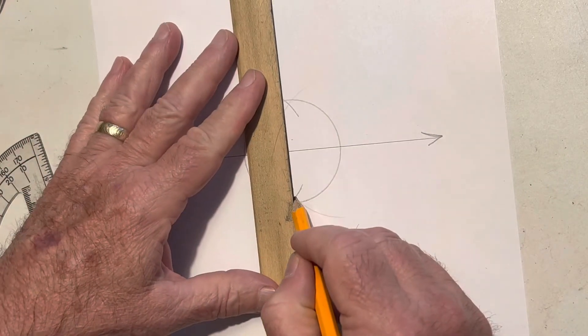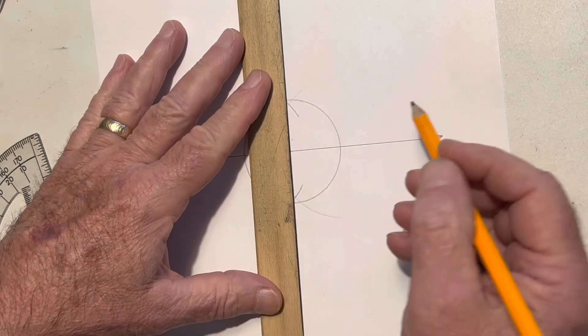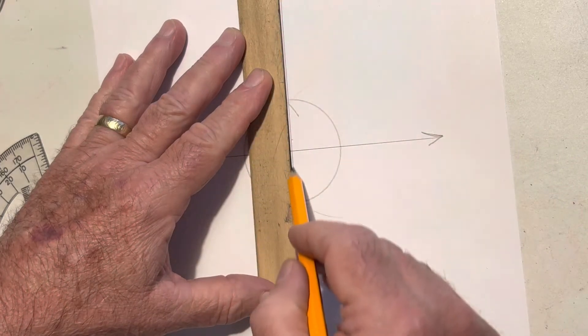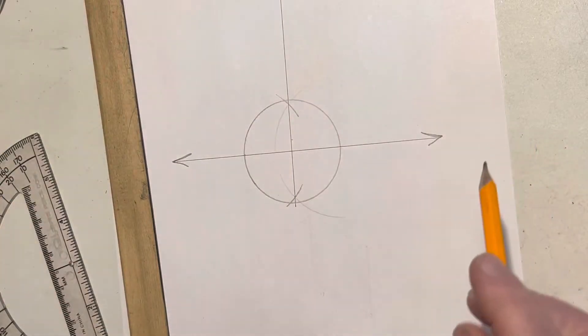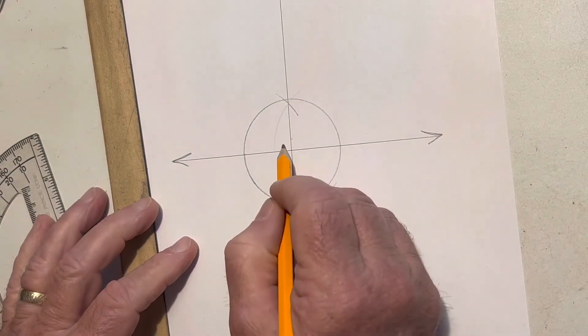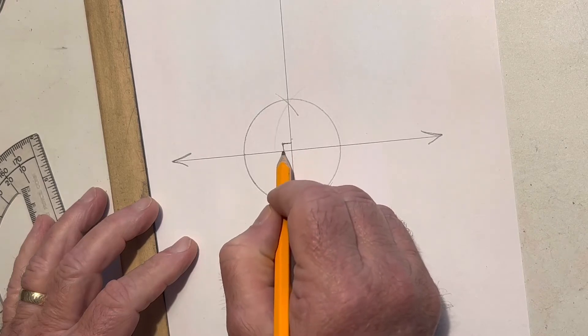I'm going to connect these. I'm going to extend the line up a little bit. Now I can draw my little box here because now I've got a 90 degree corner.